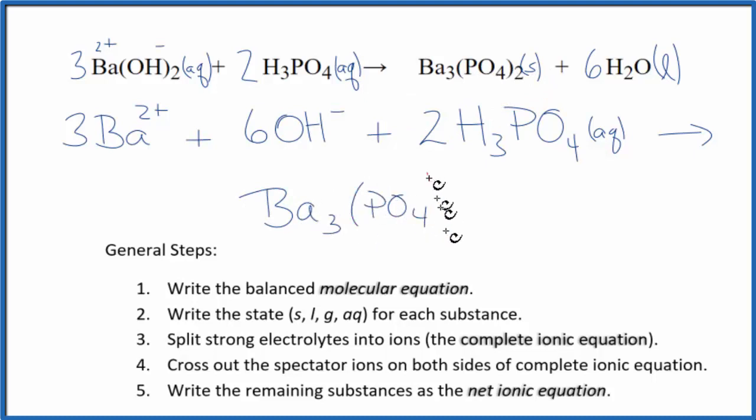So there's our barium phosphate plus water. That's a liquid. We don't split liquids apart in net ionic equations either. These are the products of our reaction. So right now, we have the complete ionic equation.